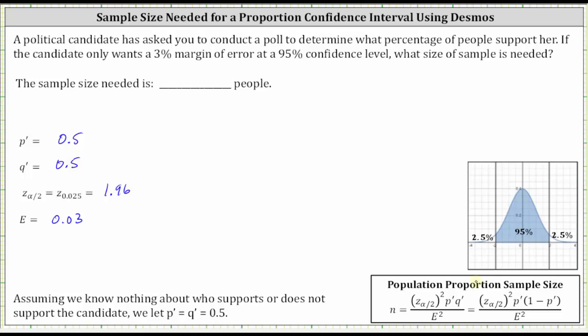And now we'll use Desmos and enter the formula here on the bottom to determine the sample size N. We will use the second formula, where instead of Q prime, we use one minus P prime. Notice N is equal to the product of Z squared, P prime, and the quantity one minus P prime divided by E squared.